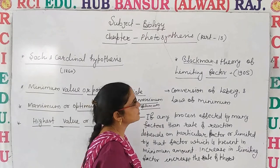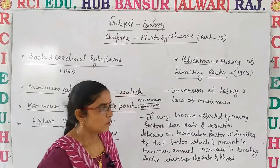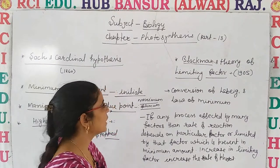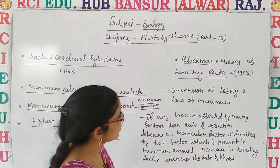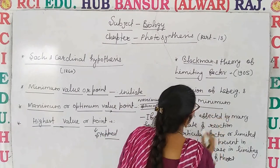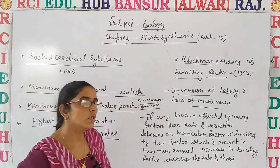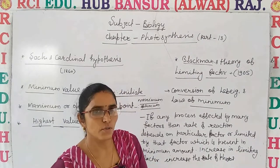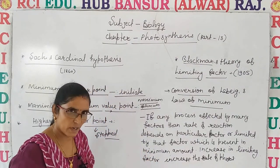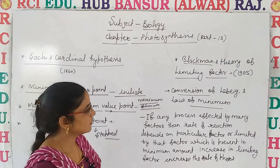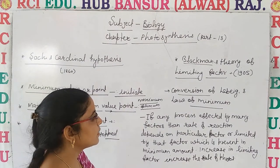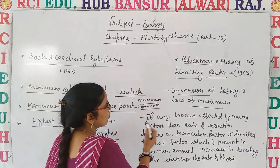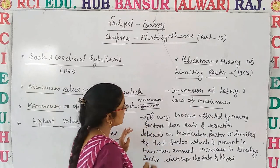Now let's discuss Blackman's Theory of Limiting Factor, given by Blackman in 1905. It is a conversion of Liebig's Law of Minimum. According to this law, when a process like photosynthesis is affected by more than one factor, it is limited by the factor which is present in the least amount.